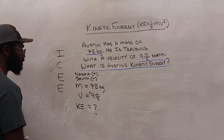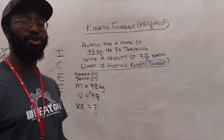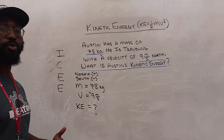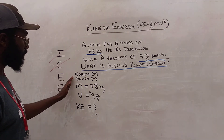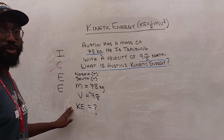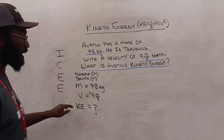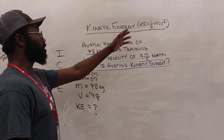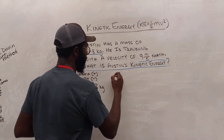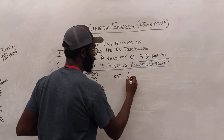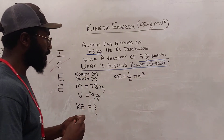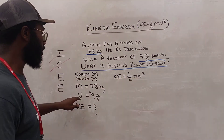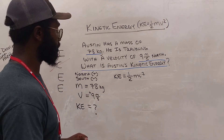Now we move to the equate step, where we simply choose the equation to solve the problem. We want an equation that contains all the variables we know and what we're looking for: M, V, and KE. We're working with the kinetic energy equation, so: KE equals one-half M times V squared. This equation has KE for kinetic energy, M for mass, and V for velocity — so that works out great.